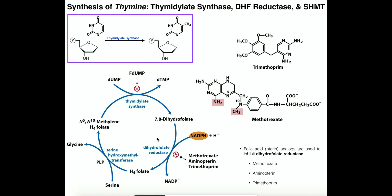It turns out that targeting thymidylate synthase and dihydrofolate reductase has been very effective in treating cancer. Cancer cells are actively dividing, so they must replicate their DNA. If you can shut down DNA replication you can potentially slow the spreading of cancer. To replicate DNA you need thymines — you need DTTP — and to get that you need DTMP. So this pathway, when inhibited, shuts down the synthesis of DTMP at two different locations.